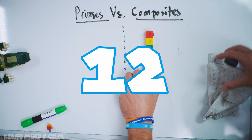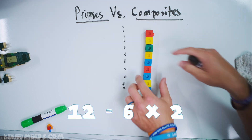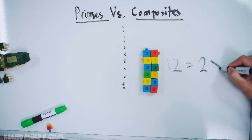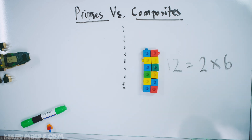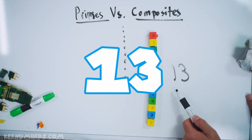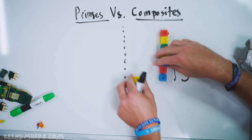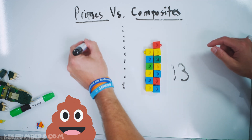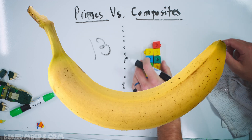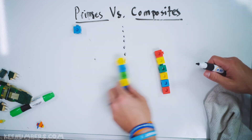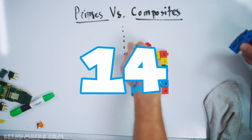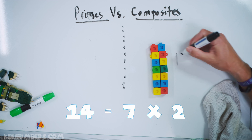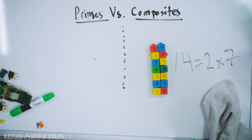Can you break 12 down into smaller whole numbers? Yes, you can — look at that, you can make a rectangle out of it. It's a 2x6. 12 is composite. Is 13 a composite or a prime number? You can't make 13 into a nice rectangle — no matter how you do it, you're going to have an odd piece hanging out. 13 is a prime number. What about 14 — prime or composite? It's a 2x7, that's 14. It is composite.